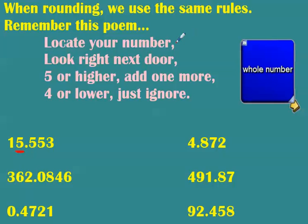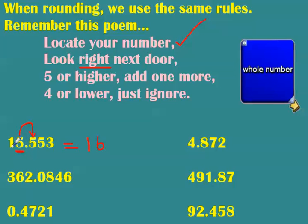I've located my number. Now I'm going to look right next door. The poem even tells you to look right — so I go to the right. The digit there is five, which is five or higher, so we add one more. My number becomes 16. Remember, anything before the underlined digit gets put back in place, and everything after what you've rounded to gets zeroed out. You could write it as 16.0 — that's the same as just 16.